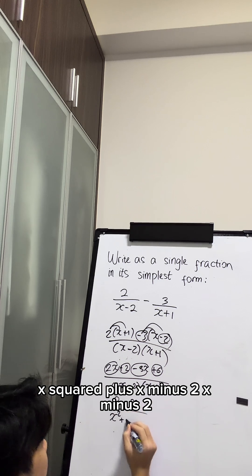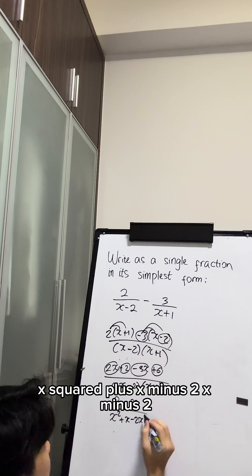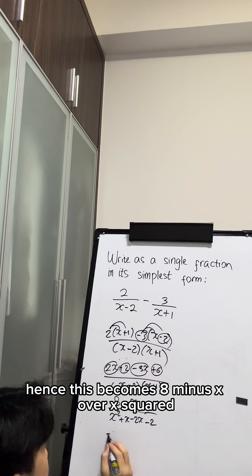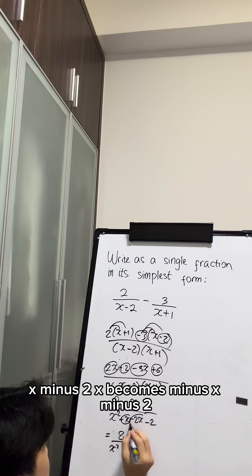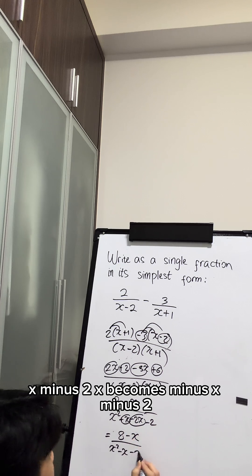x squared plus x minus 2x minus 2. Hence, this becomes 8 minus x over x squared minus x minus 2.